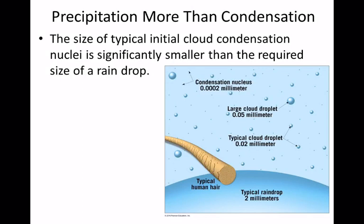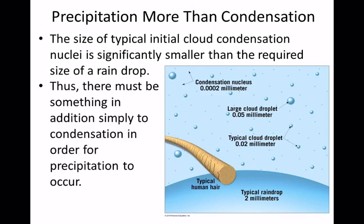How do you get rain? How do you get precipitation? In chapter 4, we talked about these things called cloud condensation nuclei, or CCN. That's the dust, the little pieces that kind of get water vapor started. But the thing about that is it's pretty small.